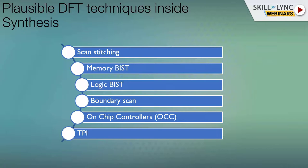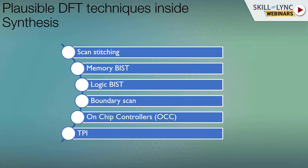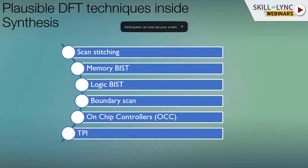Some possible DFT techniques include scan stitching — connecting the scan chains — as well as memory-based built-in self-test (MBIST), logic built-in self-test (LBIST), boundary scan, on-chip controllers, and test point insertion. Which techniques are used depends on your team, design, and methodology — some teams may not use DFT at all. It depends entirely on the company and which architecture they choose.